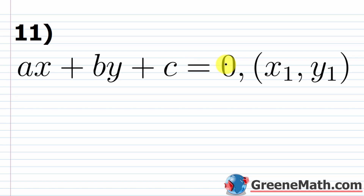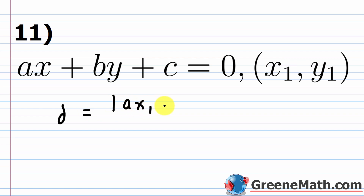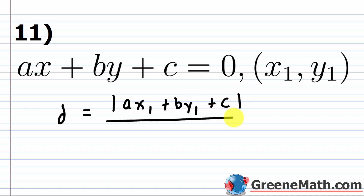That's what most books would call that. My point is just labeled as x sub 1 comma y sub 1. The strategy will be the same as what we looked at in problem 10 when we did that using the longer approach. The distance between this line and this point equals the absolute value of ax sub 1 plus by sub 1 plus c, over the square root of a squared plus b squared.